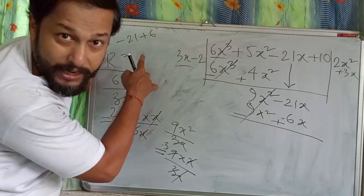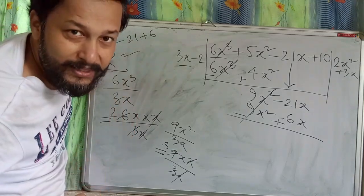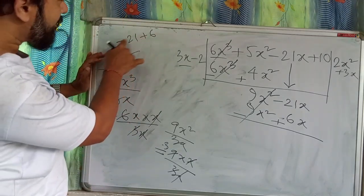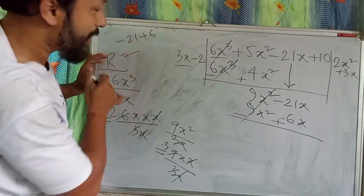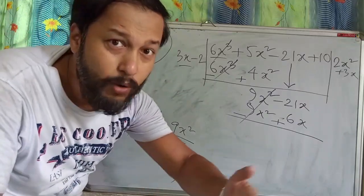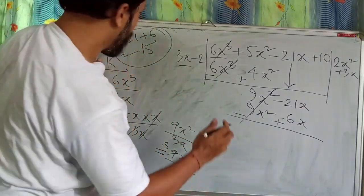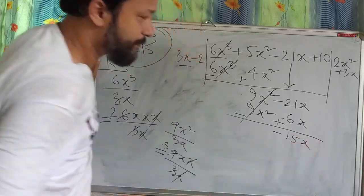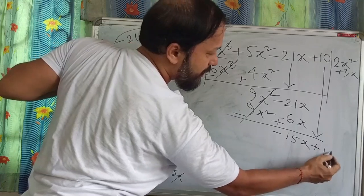Minus 21 plus 6: both signs are different, 21 is bigger, before 21 there is minus, so the result is minus 15. We get minus 15x. Then the constant plus 10 comes down.